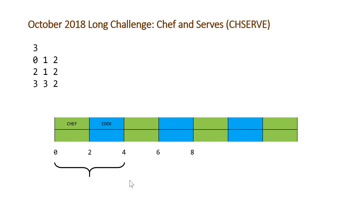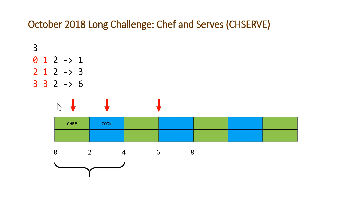We only need to be concerned about this one interval. The next step is to figure out the total number of points scored so far — where we are on this timeline. We do that by adding A and B together: that's 1 for the first test case, 3 for the second, and 6 for the third. Drawing arrows to where we are on the timeline: for the first test case we output Chef, for the second it's Cook's turn, and for the third it's also Cook's turn.